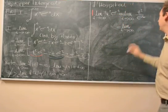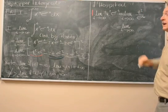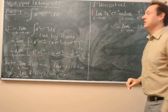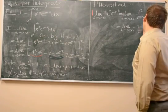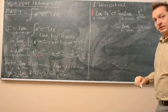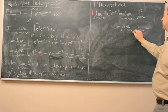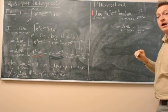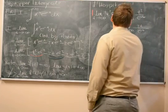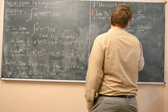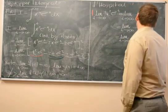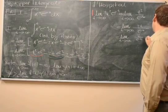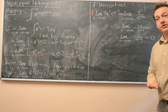We differentiate the numerator and we differentiate the denominator, and take the limit again. Differentiating t squared gives us 2t, and e to the t stays e to the t. As t goes to infinity, 2t goes to infinity and e to the t goes to infinity, so we have to apply L'Hôpital's rule again. After differentiating once more, the limit is 0.